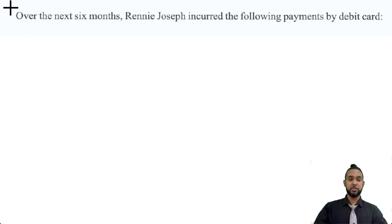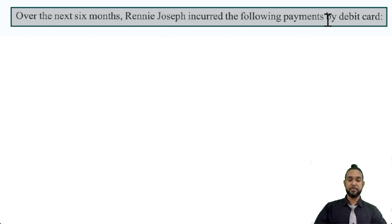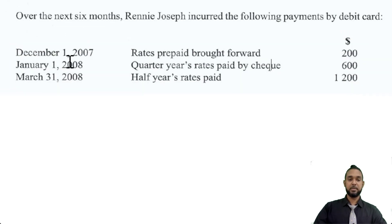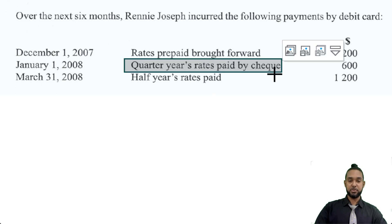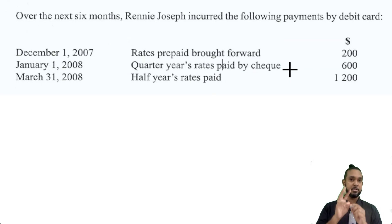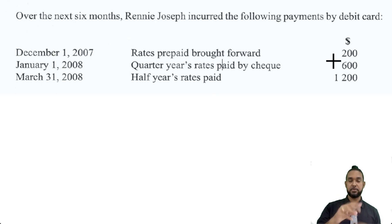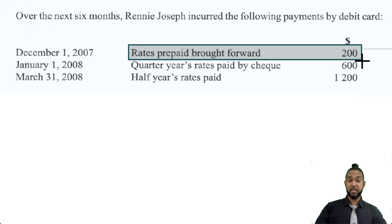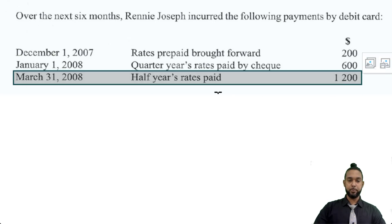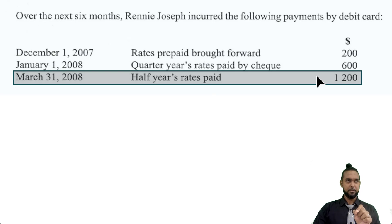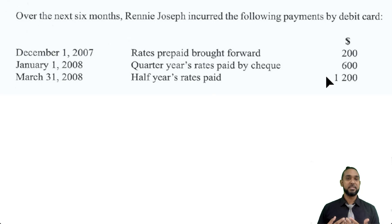Now we have part C. Over the next six months, Rennie Joseph incurred the following payments by debit card. On December 1st, 2007, rates prepaid brought forward — that's an opening prepaid expense of $200. January 1st, 2008, a quarter year's rates paid by check: $600. A quarter is three months, so $600 divided by three is $200 per month. On March 31st, 2008, a half year's rates paid by check: $1,200. A half year is six months and $200 by six months is $1,200 — so the rates expense is $200 per month, which corresponds.